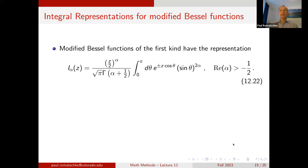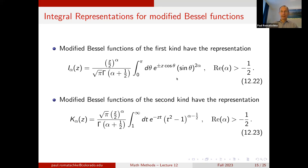There are also integral representations for the modified Bessel functions. The modified Bessel function of the first kind has an integral representation from 0 to π of e^{±z cos θ} sin^{2α}(θ) dθ. The modified Bessel function of the second kind has the integral representation: an integral from 1 to ∞ of e^{−zt} (t²−1)^{α−1/2} dt.